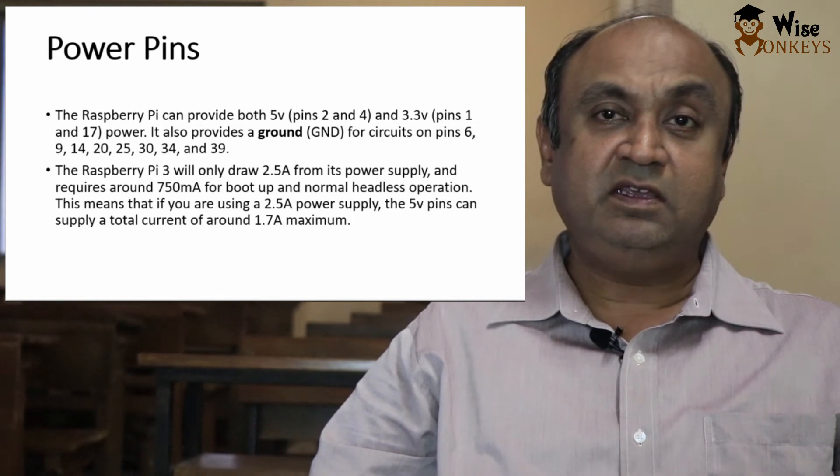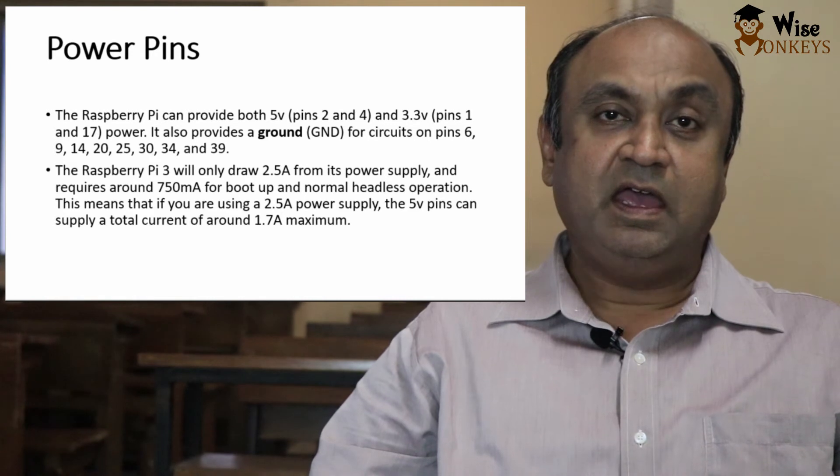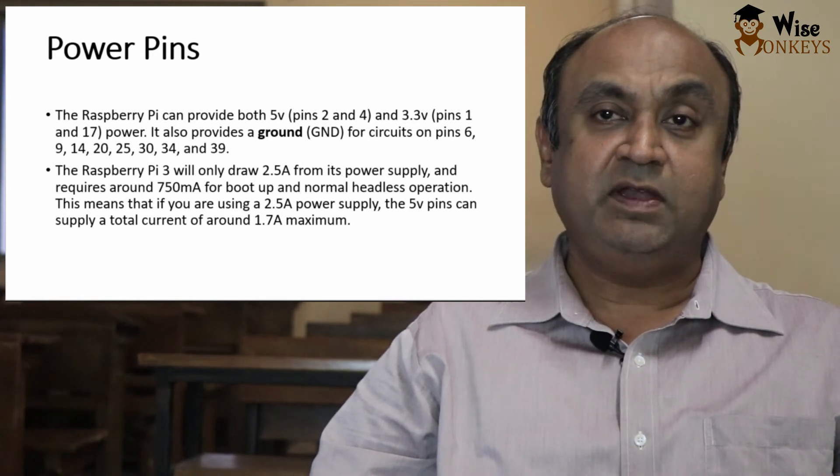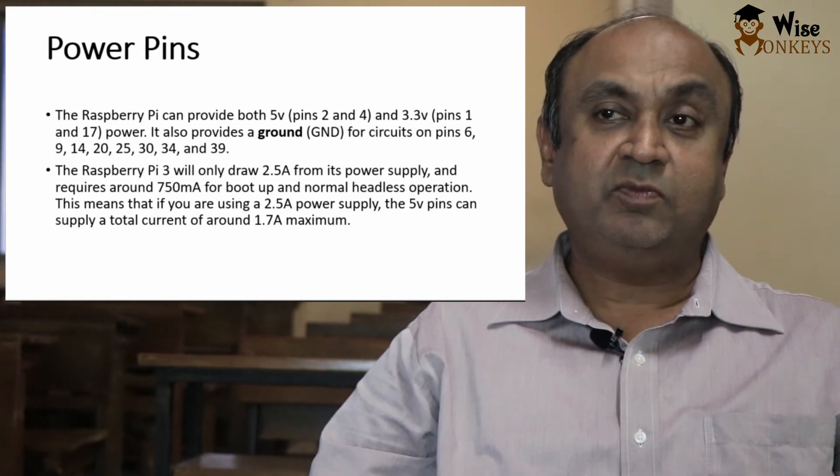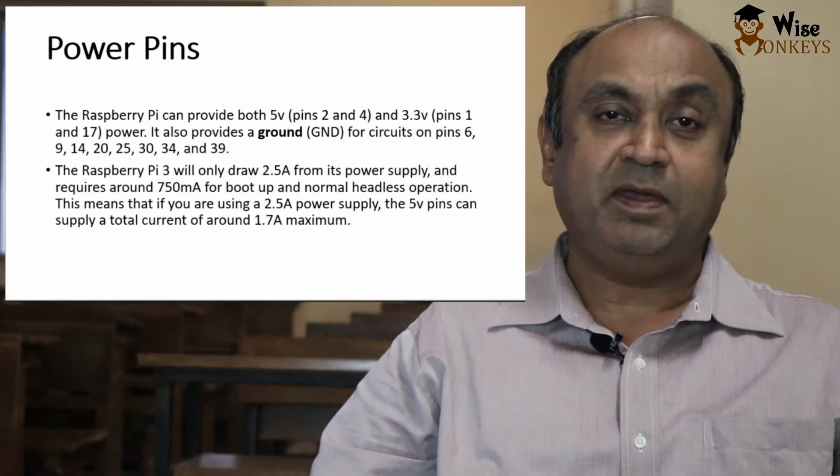The Raspberry Pi 3 draws 2.5 ampere from its power supply and requires around 750 mAh for boot up and normal headless operation. So if we are using a 2.5 ampere power supply, the 5 volt pins can supply a total current of around 1.1 ampere maximum.